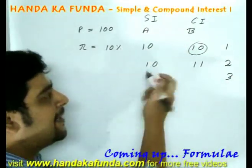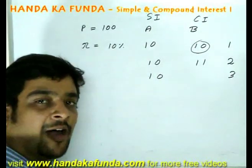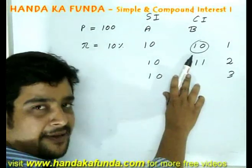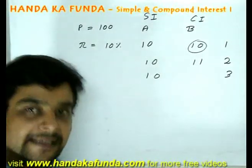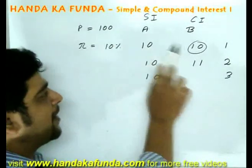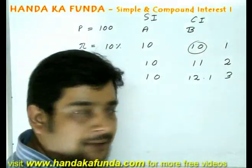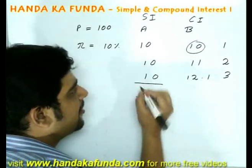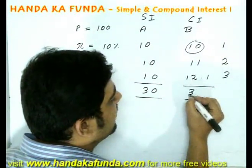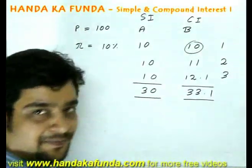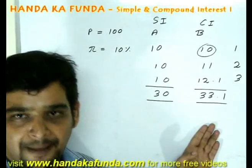In the third year, simple interest will still be 10% on 100 rupees. Compound interest will now be on the increased principal — that is 100 plus interest 10 rupees for the first year, plus interest 11 rupees for the second year, making 121 rupees. So compound interest in the third year will be 12.1 rupees. Just over a small period of 3 years, total interest in simple interest is 30%, and in compound interest it is 33.1%. Interest earned is much higher in the case of compound interest.